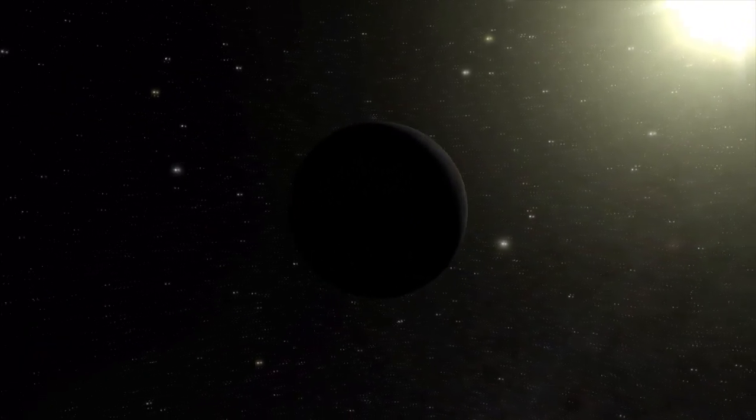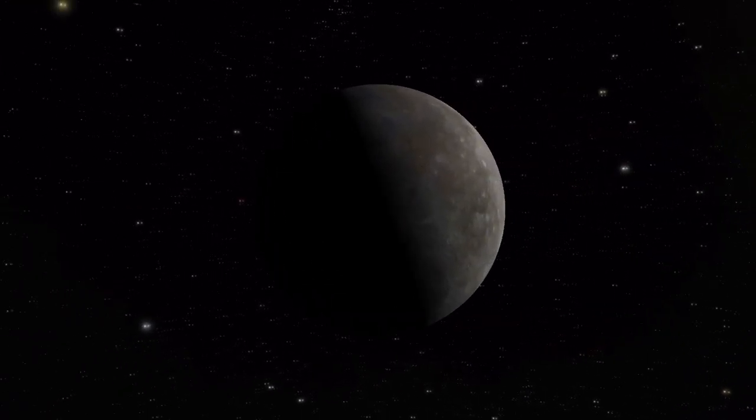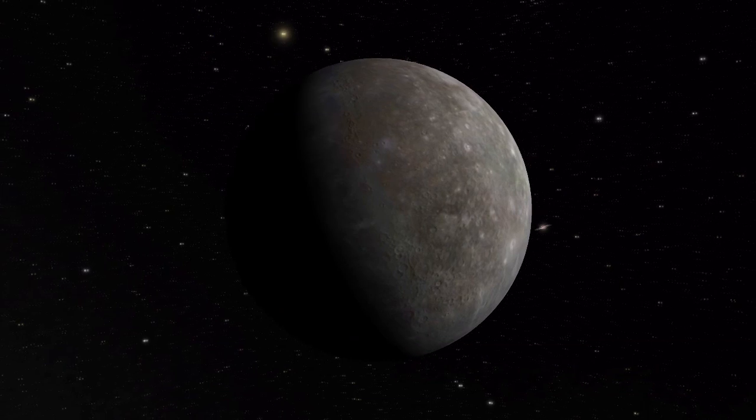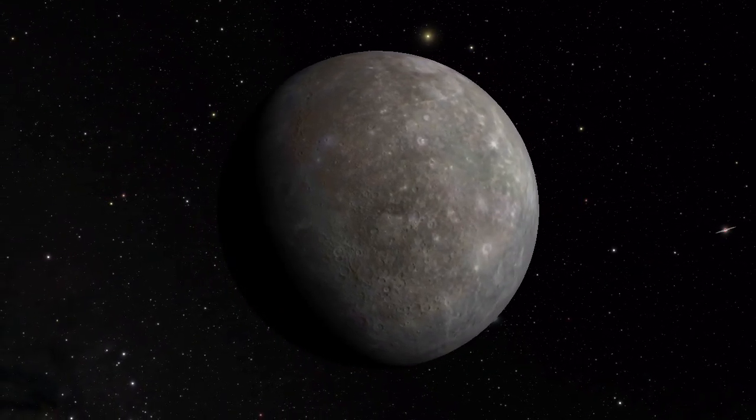Mercury is a strangely dense planet compared to the other worlds in the Solar System. Now, if it formed from the same stuff as Venus and Earth, why would it be different? A world-shattering impact could be the answer.